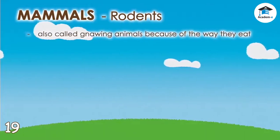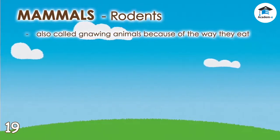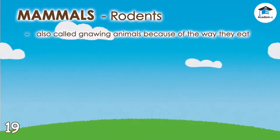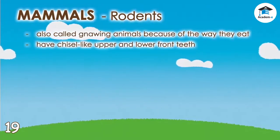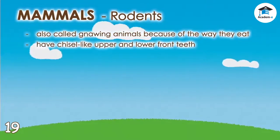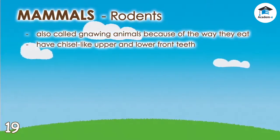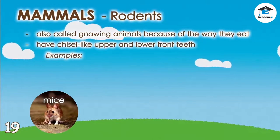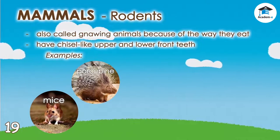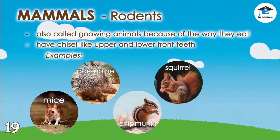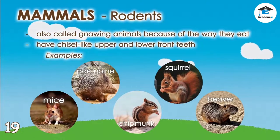Rodents are mammals also called gnawing animals because of the way they eat. These mammals have chisel-like upper and lower front teeth. Rodents include mice, porcupines, chipmunks, squirrels, and beavers.